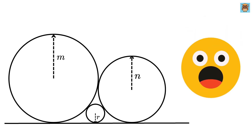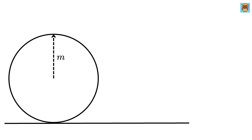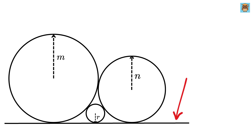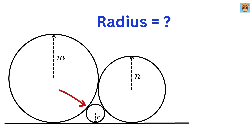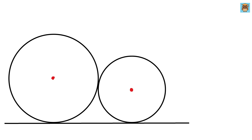Just wait for the end result as it is going to blow away your mind. We have a circle whose radius is m and another circle of radius n which is touching this circle externally at a point. Now we introduce another circle whose radius is r — it touches both of the original circles externally and also touches the same straight line which is like a floor or baseline. Our job is to find the radius of this circle.